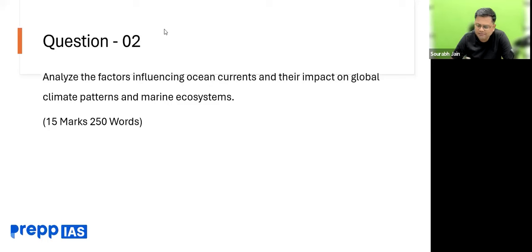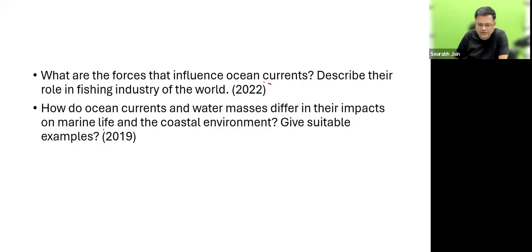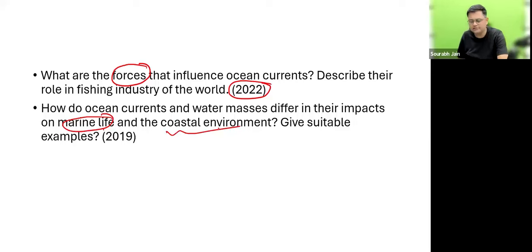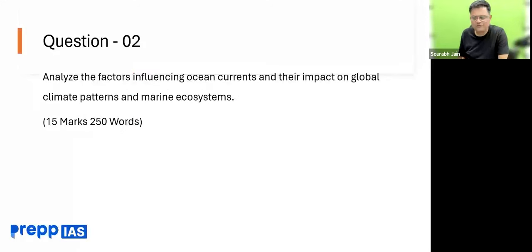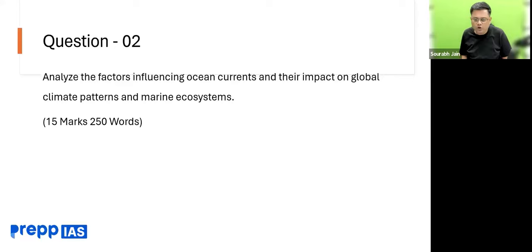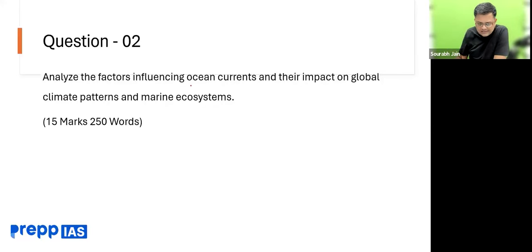So this is again based on PYQ, right? This is based on PYQ - a similar question. One question was asked in 2022 regarding forces influencing ocean currents, and a second question regarding their impact on marine life and environment. So on the basis of these two questions, a new question is framed here: 'Analyze the factors influencing ocean currents and their impact on global climate pattern and marine ecosystem.' This is a 15-mark, 250-word question. The keyword is ocean currents - it is clearly visible.